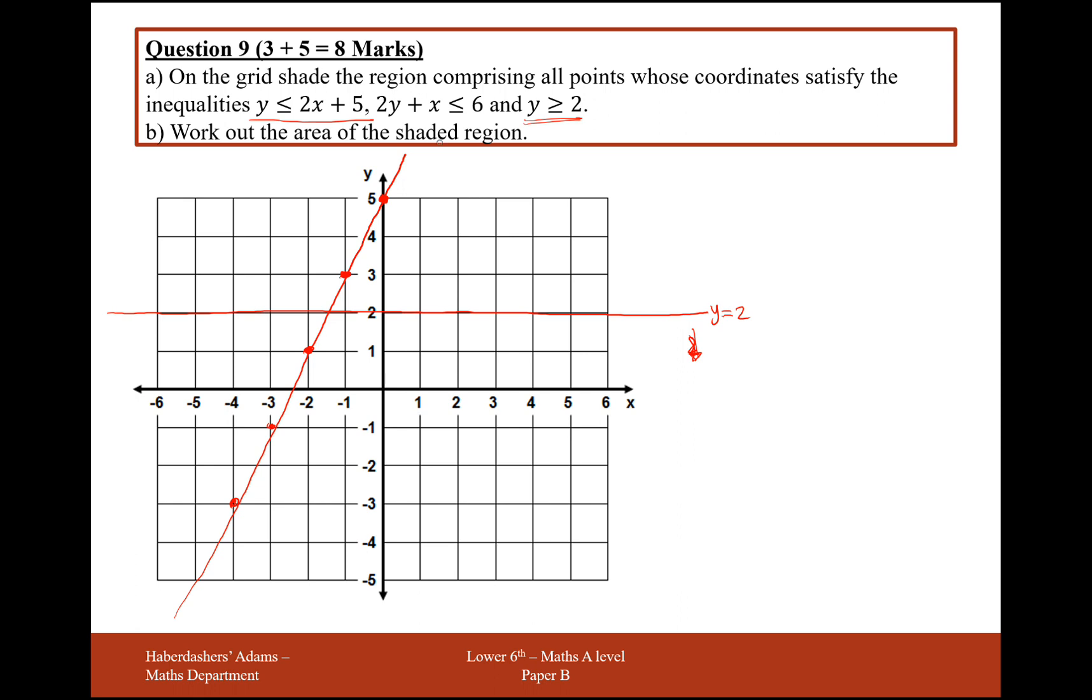And then the last one here is 2y plus x equals 6. So for this one here, the little trick for these is to set the y coordinate equal to 0 and see what x needs to be. So in this case here, x needs to be equal to 6, so y is 0, x is 6, that would be that coordinate there.